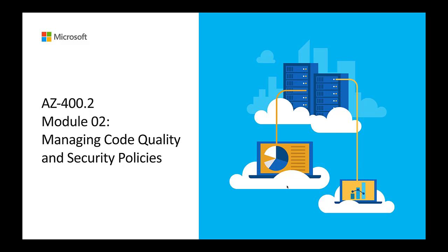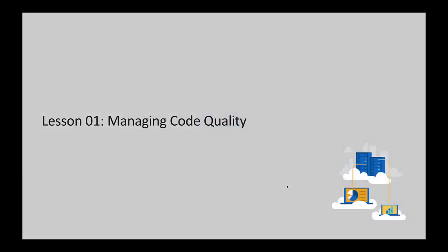Welcome back. In this module we will be seeing how to manage code quality and security policies. As we have seen in the continuous integration advantages, we mentioned that you can easily identify your code quality and security policies in the early stages of your pipeline. Here in this lesson we will first see about how to manage your code quality.